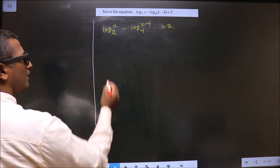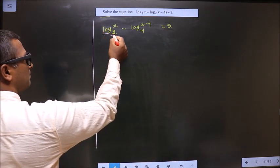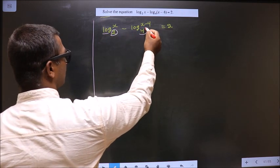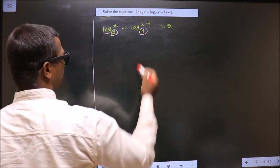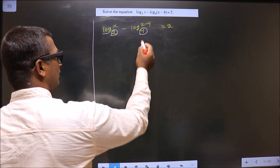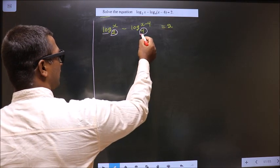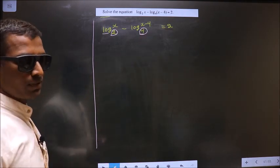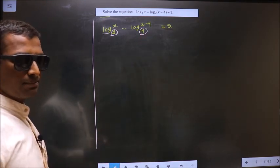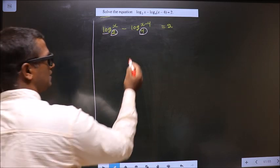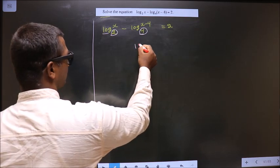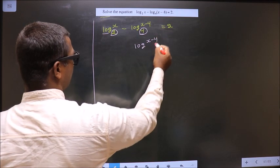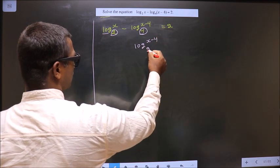Here I have log with base 2, and here I have log with base 4. I wish to make both logs have the same base 2. To do that, I rewrite 4 as 2 squared.